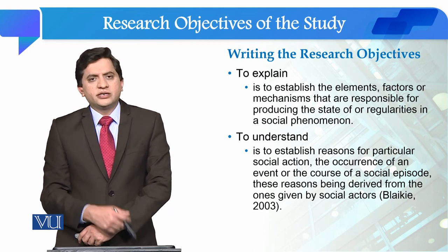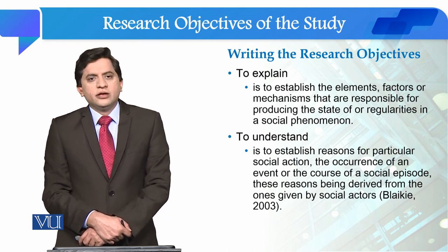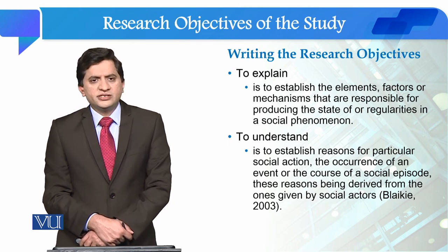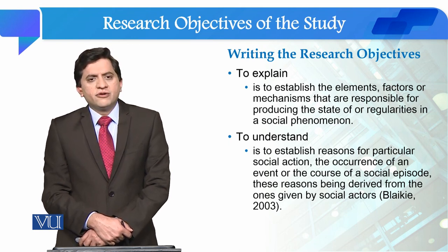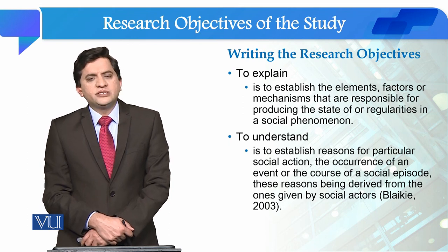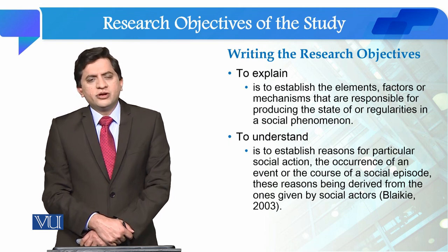مثال کے طور پر اگر ہم poverty کی بات کریں تو اس کی multiple reasons ہو سکتی ہیں۔ Economic dimension: economic opportunities اور economic growth کم ہے۔ Social dimension: over-population — ہماری آبادی بڑھنے کی رفتار resources سے زیادہ ہے۔ Cultural dimension: ہمارا educational system degree-oriented ہے نہ کہ skills-oriented — جب تک آپ لوگوں کو technical اور vocational skills نہیں دیں گے تو آپ انهیں ہنرمند افراد کیسے بنائیں گے۔